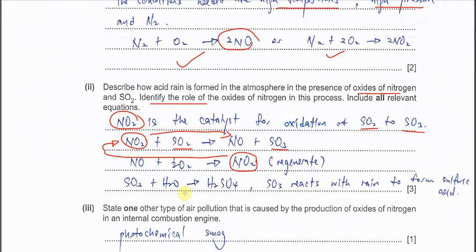To show how acid rain forms, you must show that SO3 reacts with rainwater to form H2SO4. This H2SO4 is the acid rain.